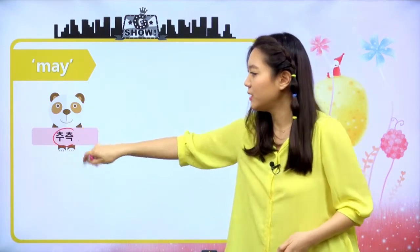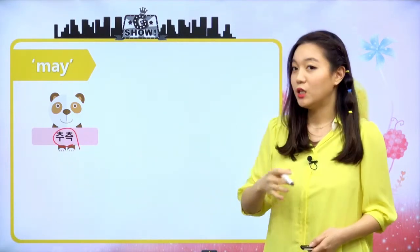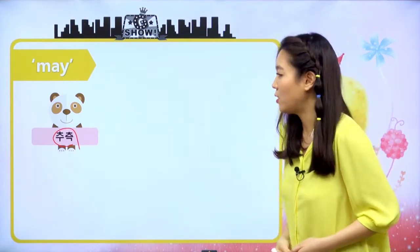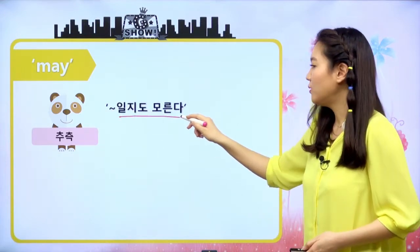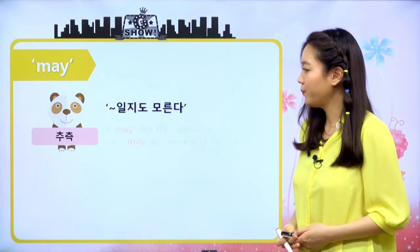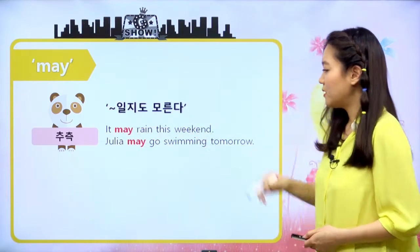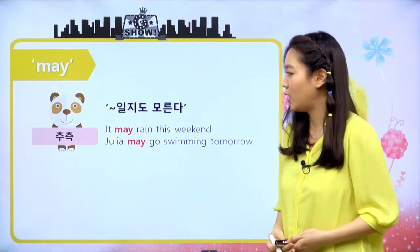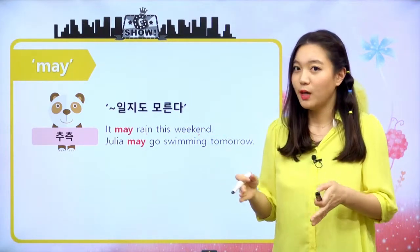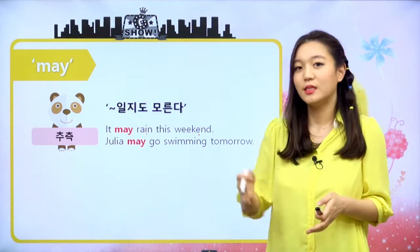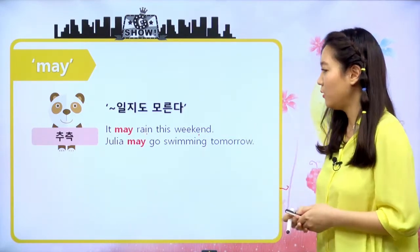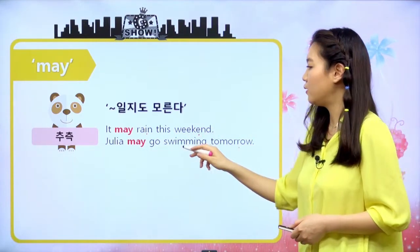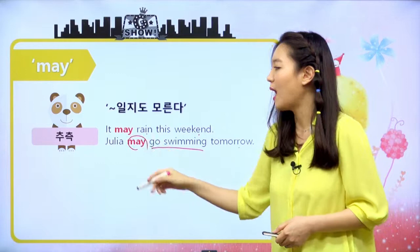첫 번째 기능은 추측입니다. 추측은 아직 일어나지 않은 일을 이럴 것이다, 저럴 것이다 라고 추측하는 것이죠. 해석은 '뭐뭐 일지도 모른다'라고 하고요. 예문을 보면: 'It may rain this weekend' — 이번 주말에 비가 올지도 몰라. 'Julia may go swimming tomorrow' — Julia는 내일 수영하러 갈지도 몰라라는 뜻이에요.